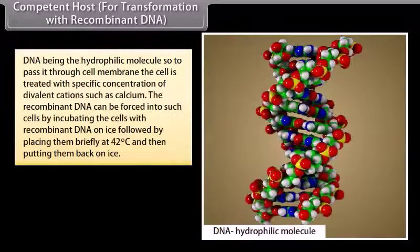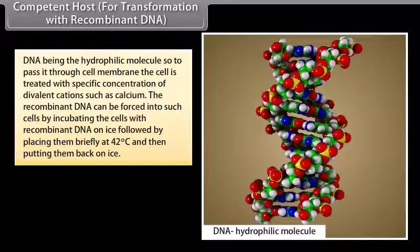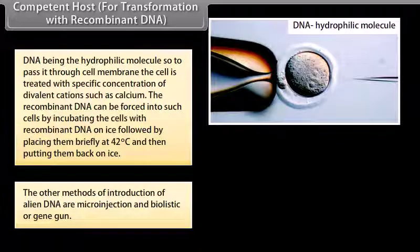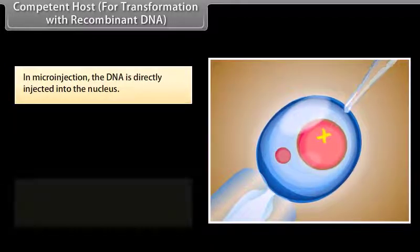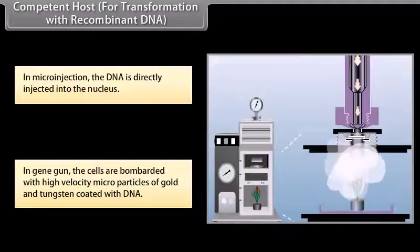Competent host for transformation with recombinant DNA. DNA being a hydrophilic molecule, to pass it through the cell membrane, the cell is treated with specific concentration of divalent cations such as calcium. The recombinant DNA can be forced into such cells by incubating the cells with recombinant DNA on ice, followed by placing them briefly at 42°C and then putting them back on ice. Other methods of introduction of alien DNA are microinjection and biolistic or gene gun. In microinjection, DNA is directly injected into the nucleus. In gene gun, cells are bombarded with high-velocity microparticles of gold and tungsten coated with DNA.